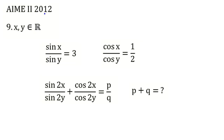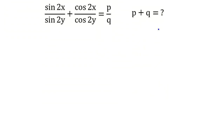We are going to solve AIME 2012, American Invitational Mathematics Examination, Problem number 9. It says x and y are real numbers. Sine x over sine y equals 3, cosine x over cosine y equals 1 half. We need to find sine 2x over sine 2y plus cosine 2x over cosine 2y, expressed as p over q in lowest terms. Find p plus q.